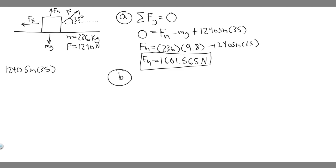Now let's move on to Part B. We're trying to find the coefficient of static friction, mu sub S, between the sled and the ground. The formula we use is: force of friction equals mu sub S times F sub N. We already have F sub N from the last step, so we just need the force of friction. They don't tell you it exactly, but it's basically implied — the horse must exert a force exceeding 1240 newtons to get the sled moving.